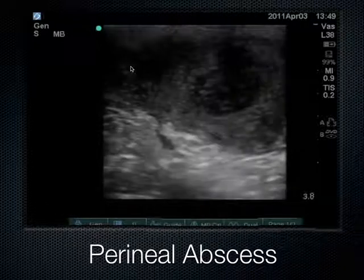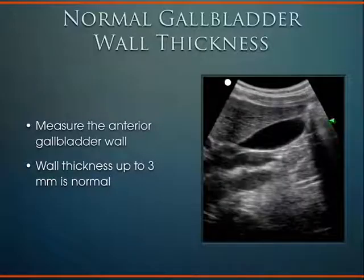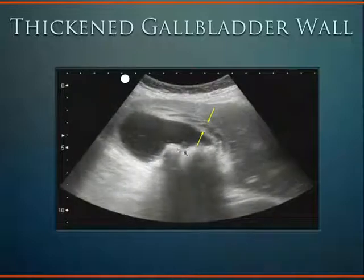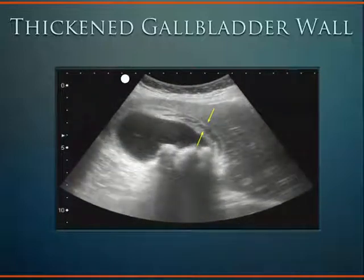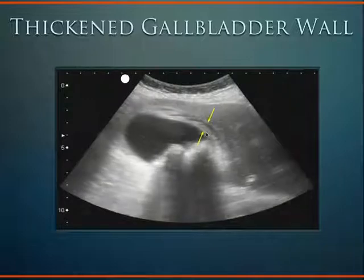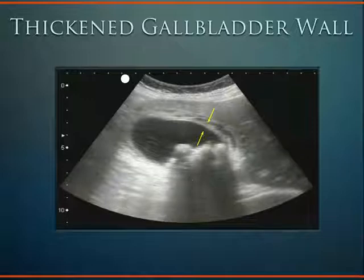The rest of the abdomen — we can see infections such as cholecystitis, or infection of the gallbladder. The gallbladder normally has a wall less than three millimeters, measured on the anterior surface. With cholecystitis, the gallbladder wall becomes quite thickened — here we can see it's well over three millimeters, very edematous. We can see gallstones causing shadowing. This is a case of acute cholecystitis.